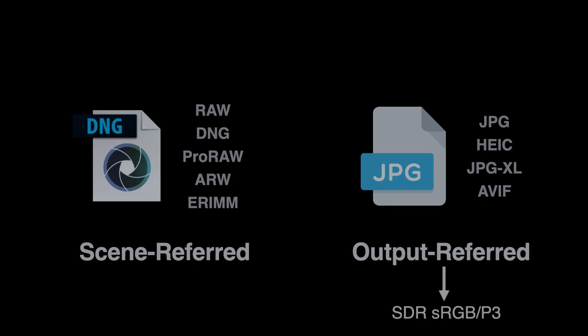Cameras that capture the full HDR range first store the data into scene-referred formats. The data is then processed by either the camera's image signal processor or a raw conversion software program to produce the output-referred data appropriate to be viewed, edited, printed, displayed, or shared.